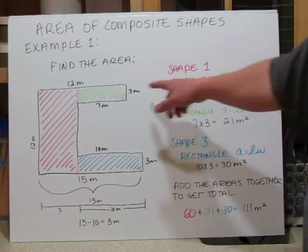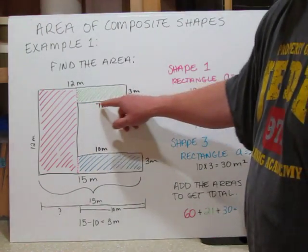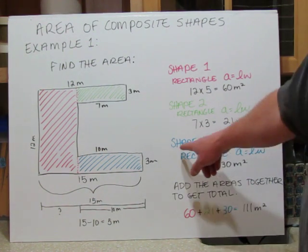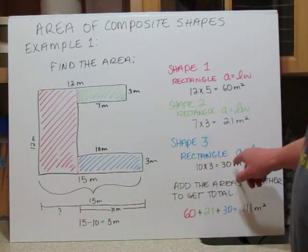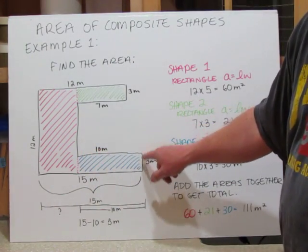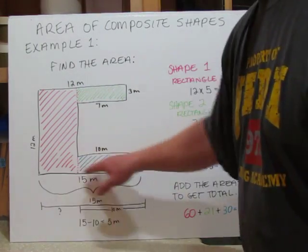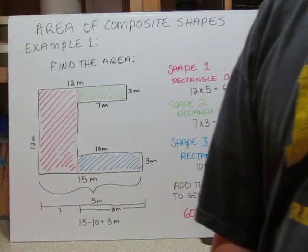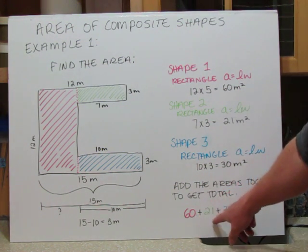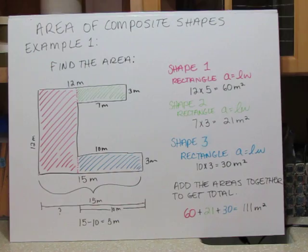The next shape is also a rectangle. Area equals length times width: 7 times 3 gives 21 meters squared. The third shape — the blue rectangle — is 10 meters times 3 meters, which equals 30 meters squared. Now I add all the areas together: 60 plus 21 plus 30 equals 111 meters squared as the total composite area.